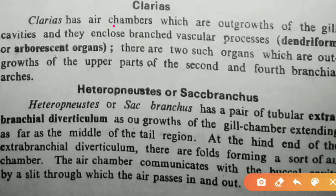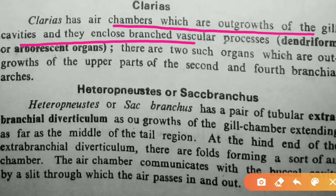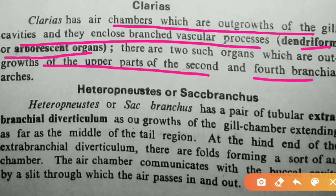For Clarias: it has air chambers which are outgrowths of the gill cavities, and they enclose branched vascular processes. These are named dendriform and arborescent organs. There are two such organs which are outgrowths of the upper part of the 2nd and 4th branchial arches.